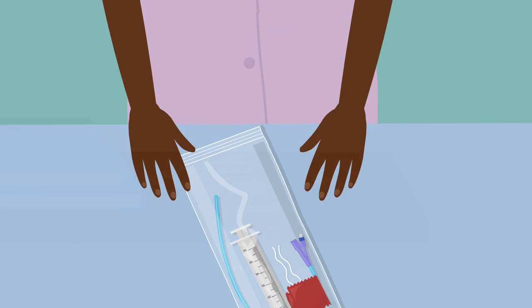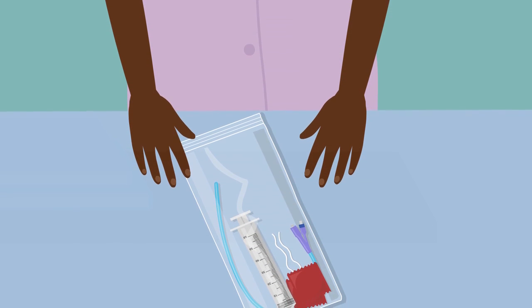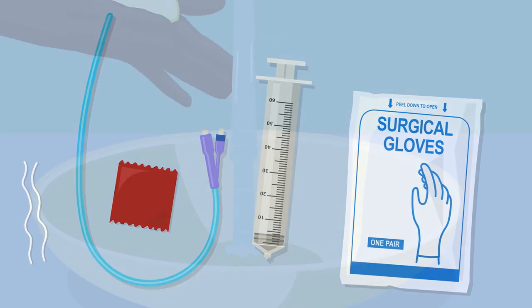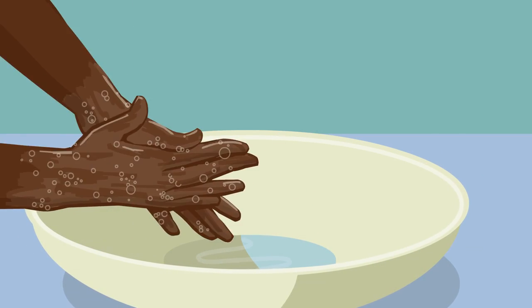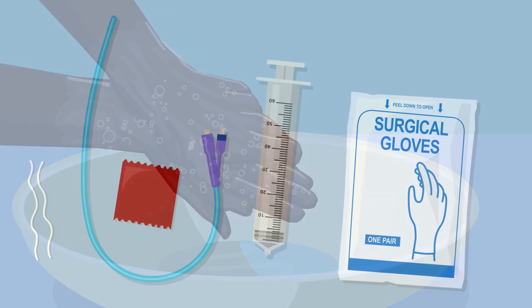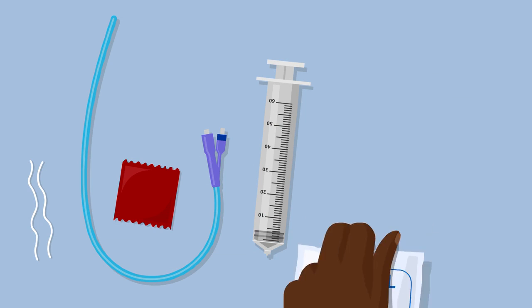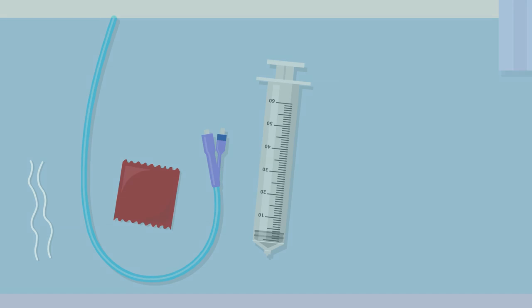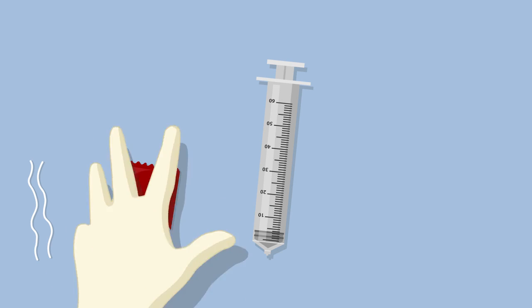Grace makes sure she has enough light so that she can see clearly. She washes her hands with clean running water and soap, puts on clean gloves, and opens and assembles the UBT kit.